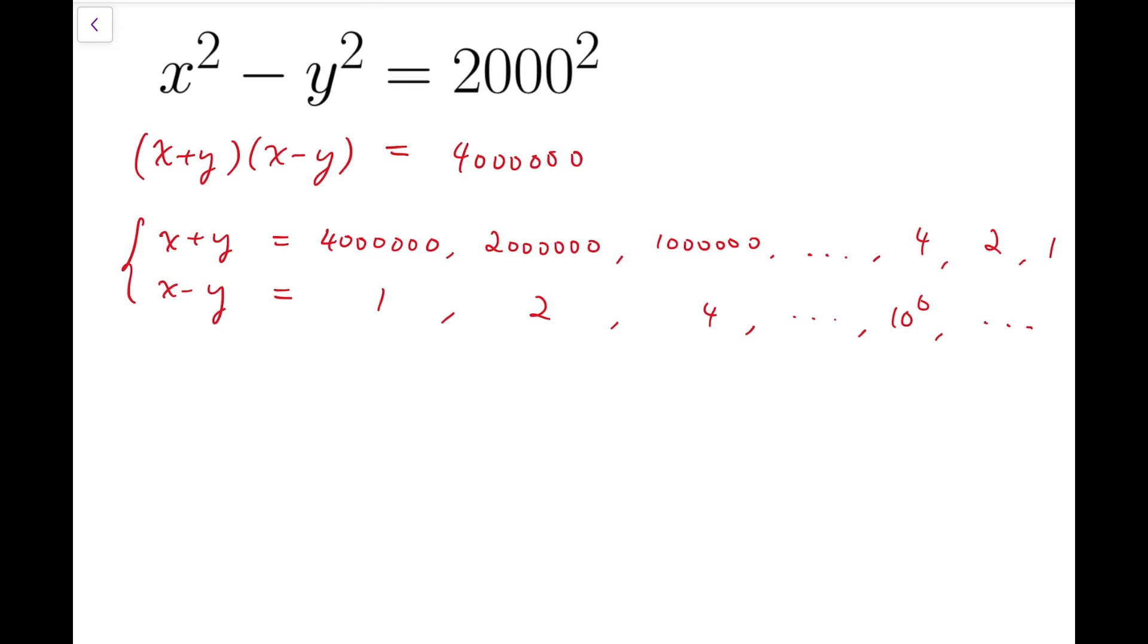There are actually some cases that we have no integral solution. For example, when x plus y is 4 million and x minus y is 1. In general, the way to solve them would be to add and subtract the equations.